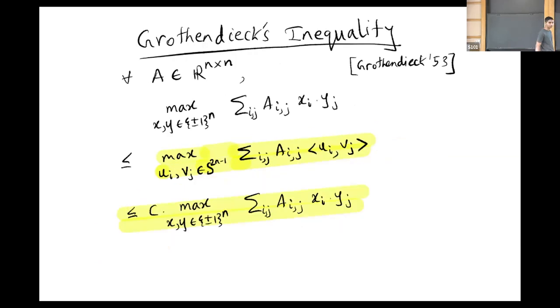Now I can state Grothendieck's inequality. In 1953, he proved that for any n cross n matrix A, bilinear maximization over the hypercube, that is summation aij xi yj where xi's and yj's are plus minus one, is approximated within an absolute constant C by a higher dimensional version. That is summation aij ui inner product vj, where we replace the scalars xi and yj by vectors ui and vj that are unit vectors in the 2n dimensional sphere. Any dimension higher than 2n will suffice.